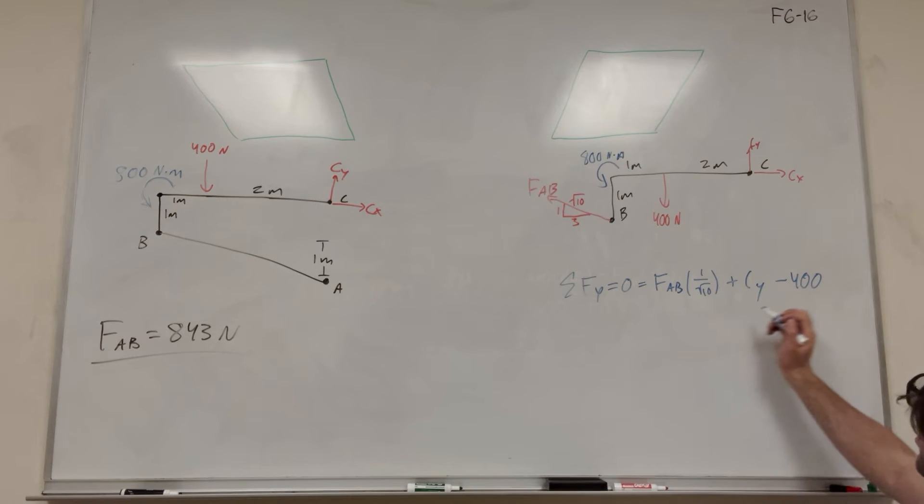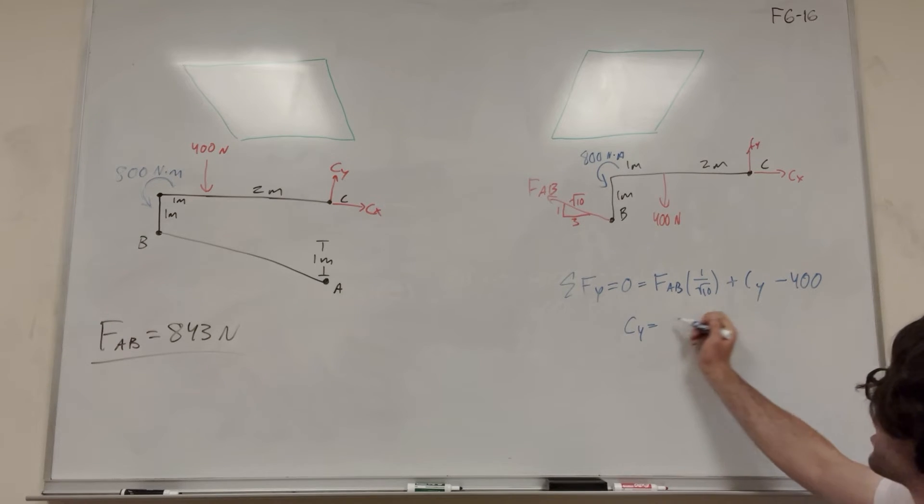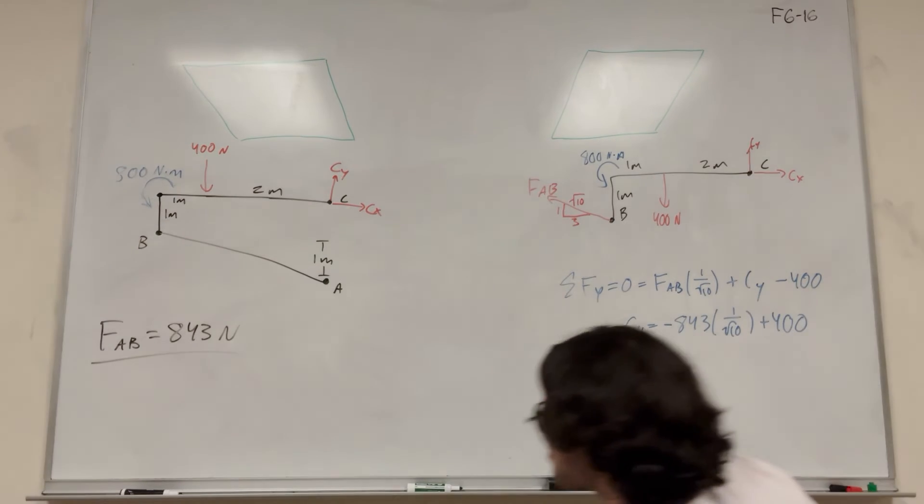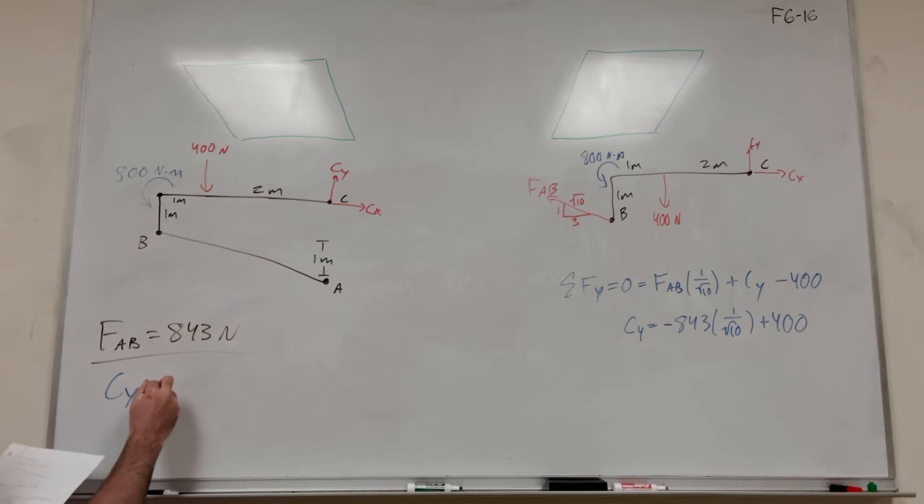So we're going to put Cy on the other side. So it'll be Cy equals minus force AB, which we found is 843 times 1 over square root of 10 plus 400. Do the math on that. You'll get Cy as a positive number, which means it's pointing upward like we said it was. 133 newtons pointing upwards.